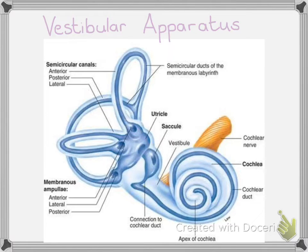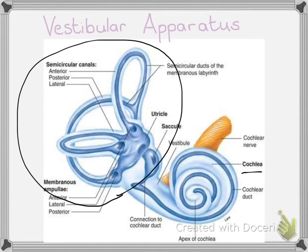Today we are going to look at the second region of the inner ear, which is the vestibular apparatus. We are on page 170 in your textbook. So far we have looked at the cochlea, which is the structure used for hearing. Today we are going to look at the vestibular apparatus, which is the whole upper region of the inner ear. It's made up of the utricle, the saccule, and the semicircular canals, and is responsible for maintaining our balance and equilibrium.